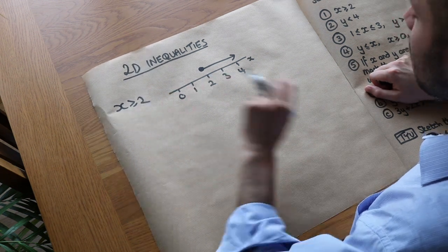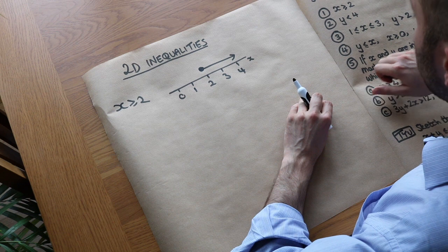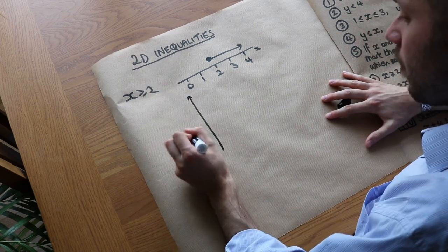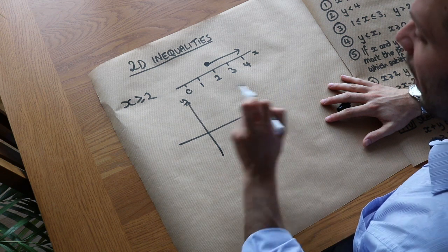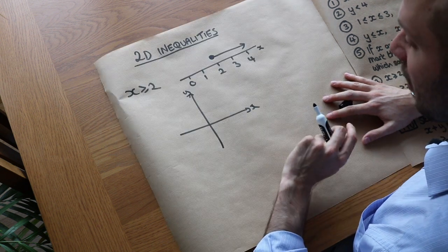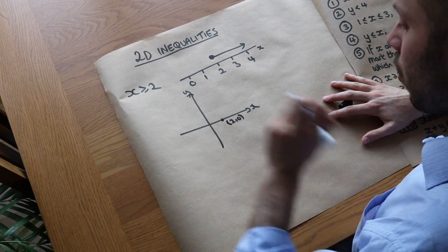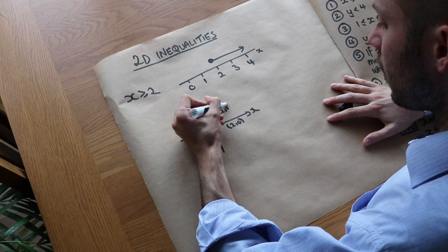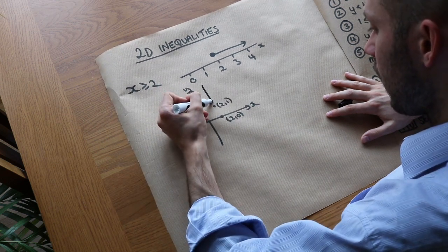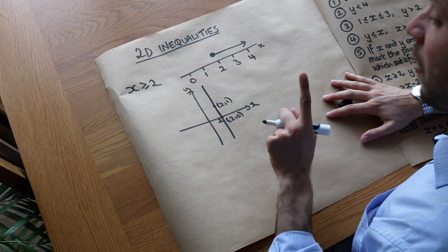We've got one variable x here. What if we had x and y? If we have an inequality in terms of two variables, how would we represent it? We could plot x ≥ 2 on an xy plane. If x equals 2, any coordinate with x value of 2 satisfies this — for example (2,0) or (2,1). All such points form a vertical line through x=2 on the x-axis.